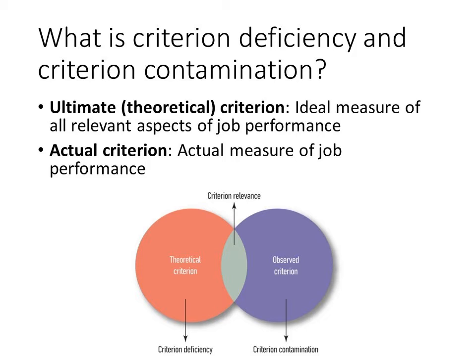The ultimate criterion is conceptual in nature. Because it's perfect — because it's the ideal measure — we can never fully measure job performance. We are humans, we make mistakes, we don't know everything there is to know, even with the best technology. We assume that every time we take a measurement, there is some error inherent in the process. The ultimate criterion exists out there, we don't know what it looks like, and we'll never be able to create it.